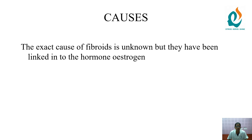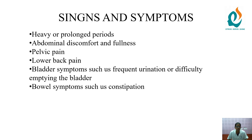The causes of fibroid uterus — most of the causes are unknown, but some are linked to the hormone estrogen. The first signs and symptom is heavy or prolonged periods.